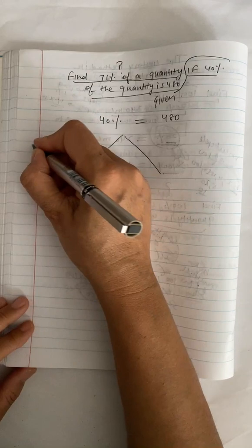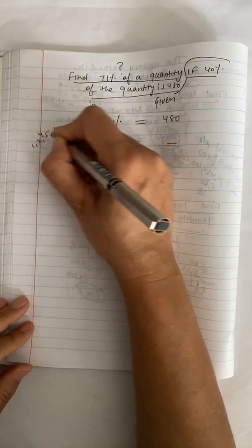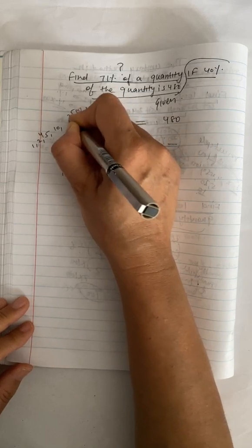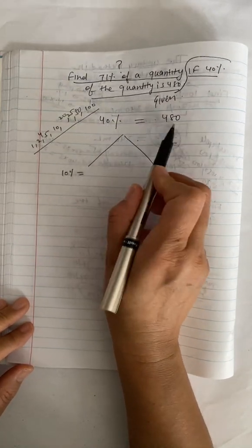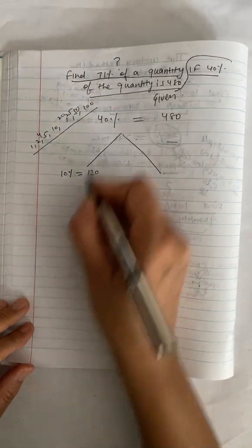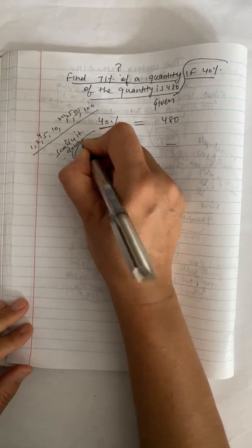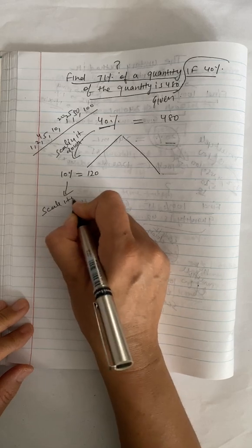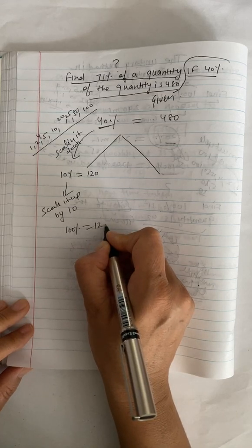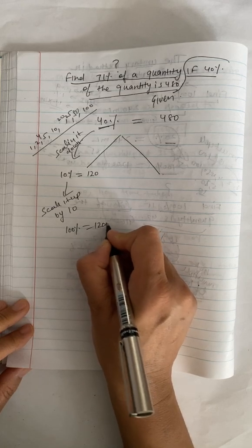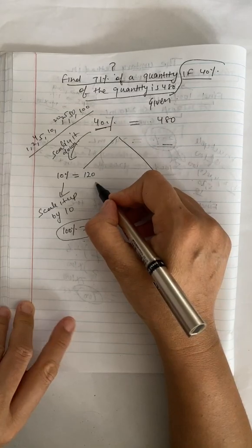One way you can also do is you can find 10% because we know the multiples of 100. You have 1, 2, 4, 5, 10, 20, 25, 50, and 100. You can do 10% first. 40% is 480, which means 10% is going to be 120. From 40% to 10%, you are scaling it down by 4. That's 10% is 120. Then you need to scale it up by 10, which means you multiply this by 10 and you get 100%, which is equal to 1200.